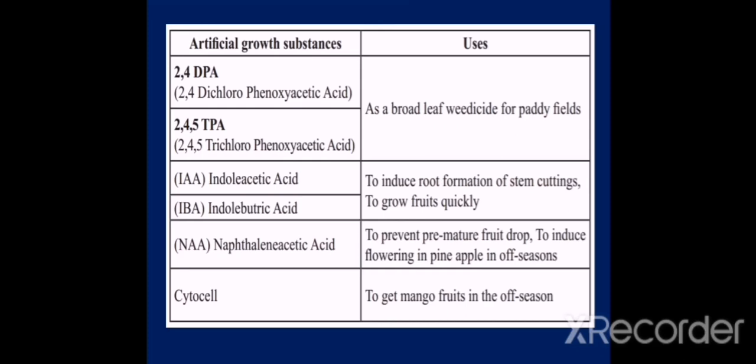Here are some artificial growth substances and their use. 2,4-D PA and 2,4,5-T PA are used as a broadleaf weedicide for paddy fields. IAA and IBA are used to increase root formation of stem cuttings and to grow fruits quickly. NAA is used to prevent premature fruit drop and to induce flowering in pineapple in off-season. Cycocel is used to get mango fruits in the off-season. So these are the artificial growth substances we have to discuss under our syllabus.